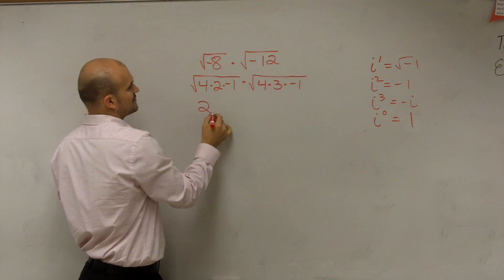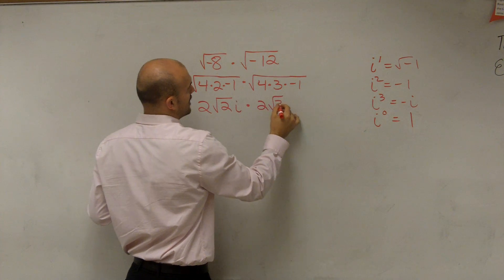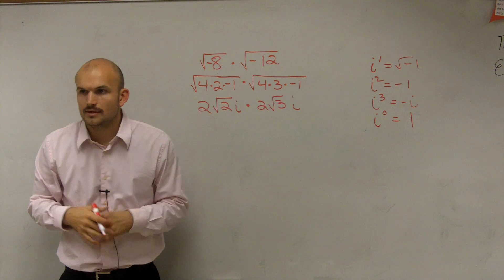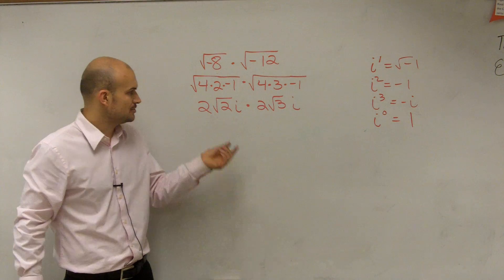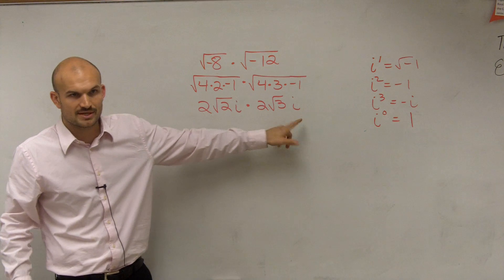So therefore, you have 2 radical 2i, and this one is 2 radical 3i. Now when multiplying radicals, you can only multiply your numbers, then your radicals, and then your complex numbers.